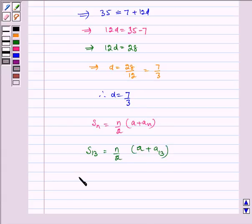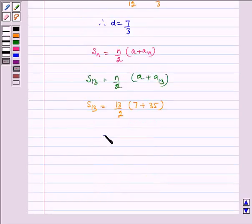Substituting all the values, we get S13 is equal to 13 by 2 multiplied by 7 plus 35. Now solving this, we get 13 by 2 multiplied by 42. This gets cancelled by 21, so we get S13 is equal to 273.